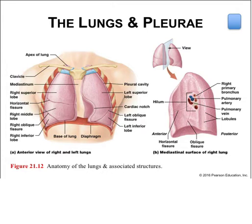Each lung is split into lobes—the right lung with three, the left with two due to the space needed for the heart. The right lung is split into superior, middle, and inferior lobes; the horizontal fissure separates the superior from the middle lobes and the oblique separates the middle from the inferior. The left lung is split into superior and inferior lobes divided by the oblique fissure. Each secondary bronchus supplies one lobe of the lung, commonly called lobar bronchi. The lobes are further split by thin walls of connective tissue into bronchopulmonary segments, and the tertiary bronchi are therefore called segmental bronchi.